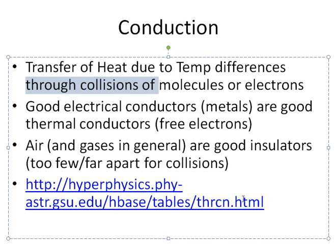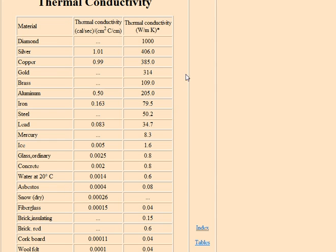To get an idea of what the thermal conductivity looks like for different materials, let's follow a link to the Hyperphysics site, which has lots of different resources. We're going to look at thermal conductivity — generally in physics we'll use watts per meter Kelvin. It's really looking at how much energy is transferred, the rate of energy transfer, compared to the distance over which it's being transferred and the temperatures involved.